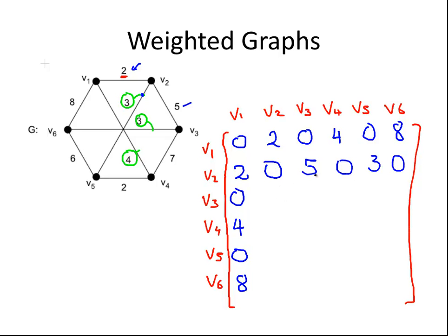So we already have the first two entries there. So we just have to complete it. 5, 0, 3, 0. And again, it's to do with the symmetric quality of an edge. If V1 is connected to V2, then V2 is connected to V1. So V3, we've already got it's not connected to V1. It is connected to V2 with an edge of weighting 5. It's not connected to itself.